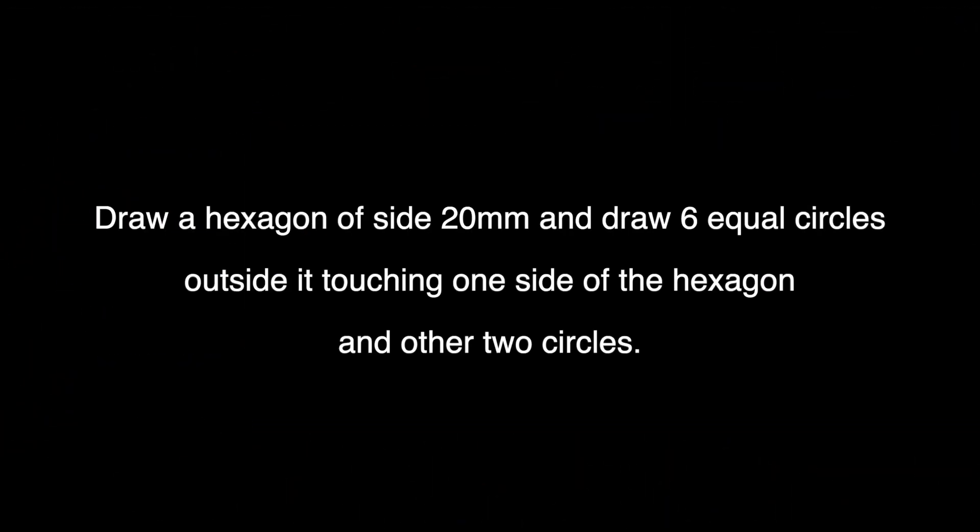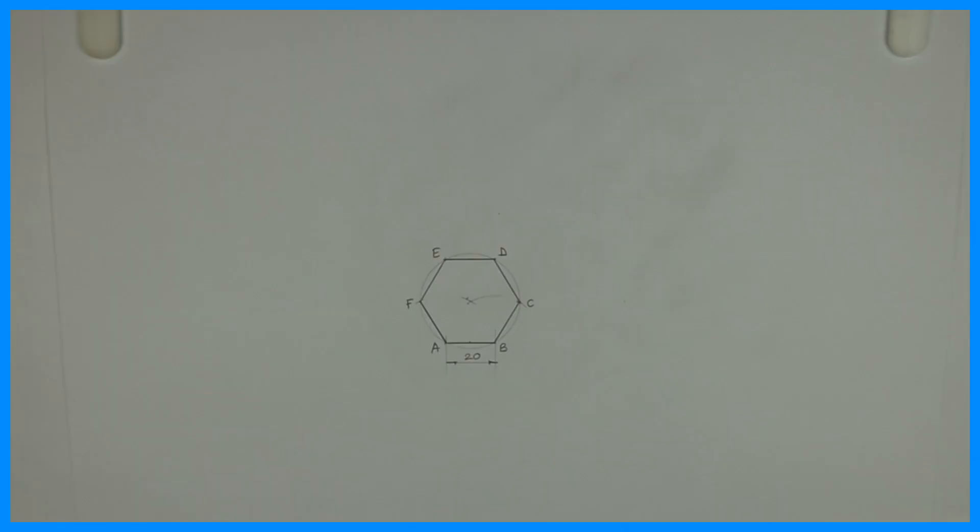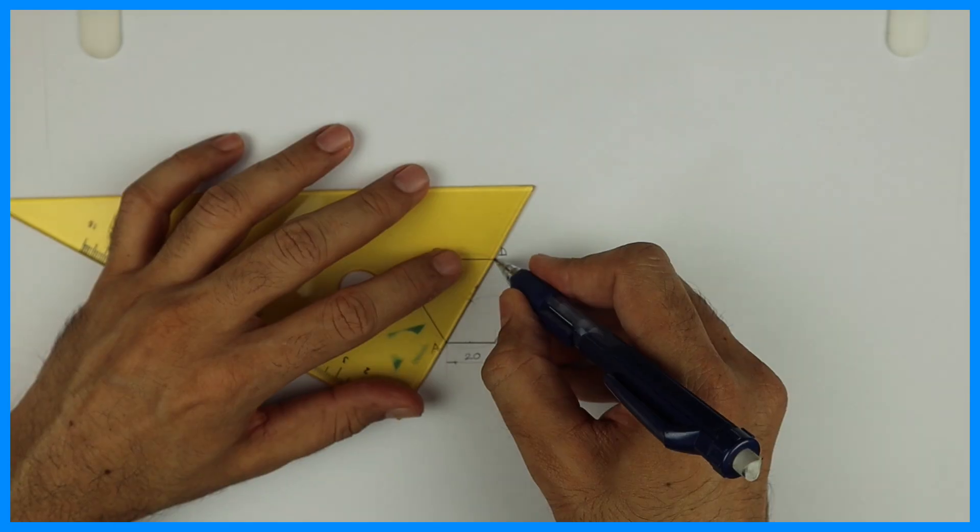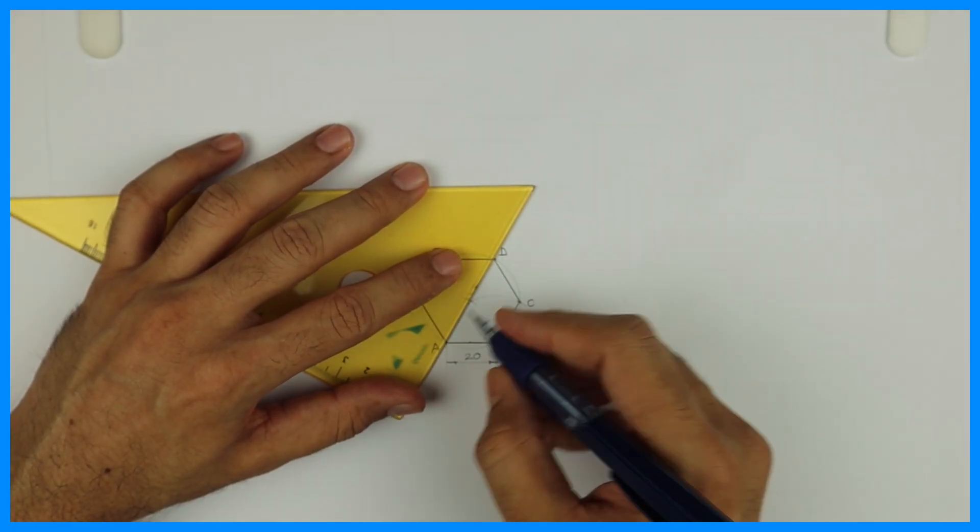Welcome to technical drawing. Today we are going to draw a hexagon of side 20mm and draw six equal circles outside it, touching one side of the hexagon and other two circles.